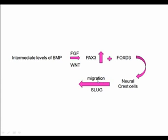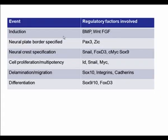There is a cascade of factors that influences the formation, migration, proliferation, and differentiation of neural crest cells into many different cell types. Neural crest development involves many regulatory factors that vary by species. The induction of neural crest depends on levels of BMP, FGF, and the WNT gene. Once the neural plate border — the region between the neural plate and ectoderm — is identified, it is specified by expression of PAX3 and ZIC.